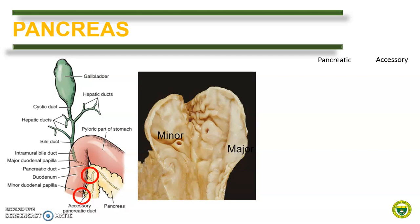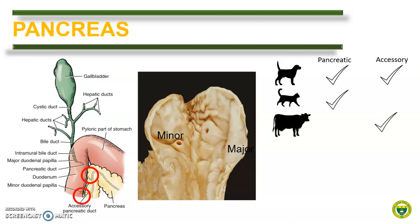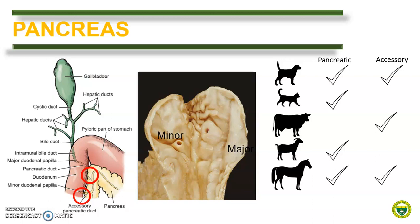Now let us compare the presence or absence of pancreatic and accessory pancreatic ducts among domestic animals. In dogs, both the pancreatic and accessory pancreatic ducts are present. In cats, only the pancreatic duct is present. In large ruminants like cattle and water buffalo, only the accessory pancreatic duct is present. In small ruminants, only the pancreatic duct is present. In horses, both ducts are present. In pigs, only the accessory pancreatic duct is present.